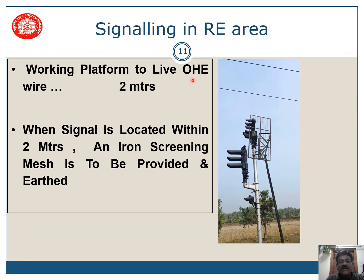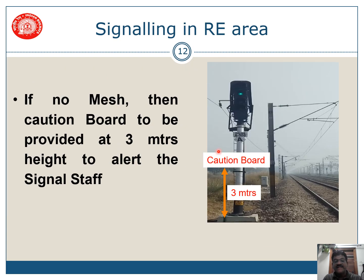The working platform to live OHE shall be a minimum of 2 meters. When the signal is located within 2 meters of the OHE wire, an iron screening mesh has to be provided and it has to be earthed, with the earth resistance less than 10 ohms. If we are not able to provide this mesh and the distance is less than 2 meters, then a caution board must be provided at 3 meters height to alert the signal staff.